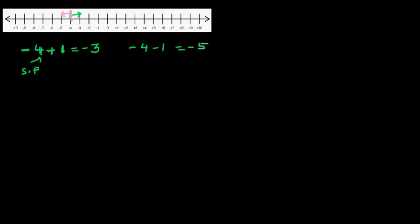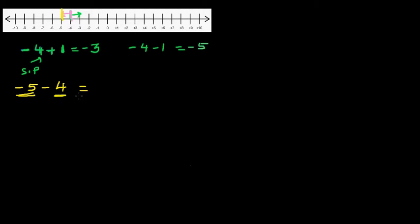Let's do a few more examples. What will happen if it is negative five take away four? From negative five, that's your starting point, and you're going four to the left. Count one, two, three, four — so you reach negative nine. The answer is negative nine.